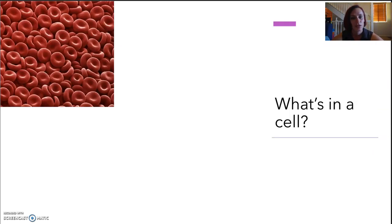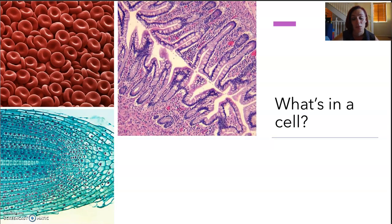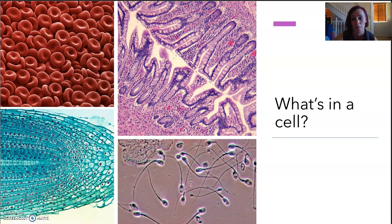What is in a cell? Cells do very specialized jobs. They can be default, or they can be specialized. So stem cells are unspecialized cells. Here we've got some red blood cells. Here we've got some onion root tip cells. Here we've got some small intestine cells, and here are some sperm cells.